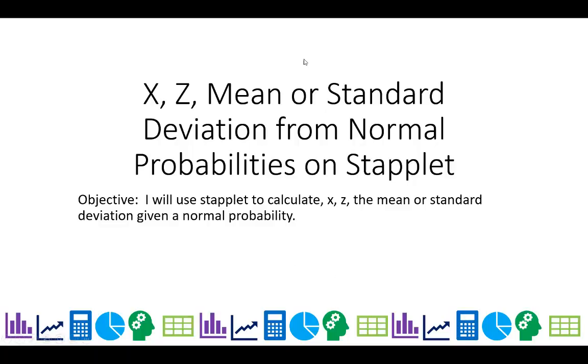Here we're going to use Staplet, a very powerful applet set, to calculate values from normal probability. Values could be an x-value, a z-score, a mean, or a standard deviation.